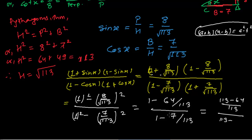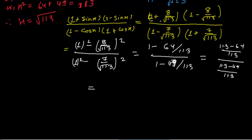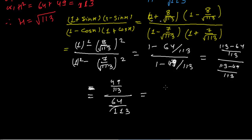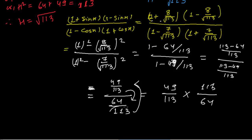So we have (49/113) divided by (64/113). The 113s cancel out, giving us 49/64. So the answer to the first expression is 49/64.